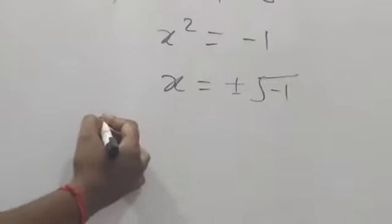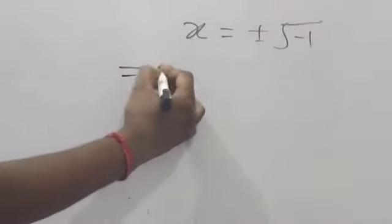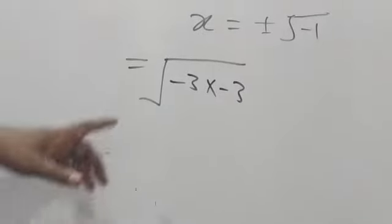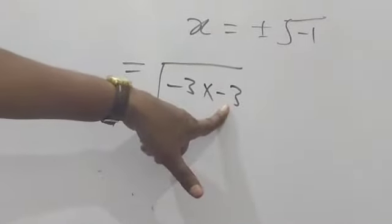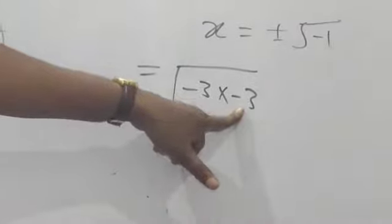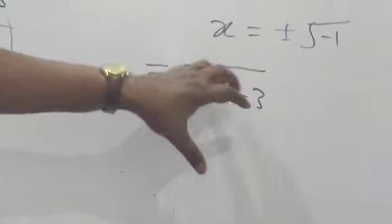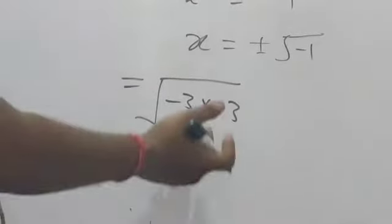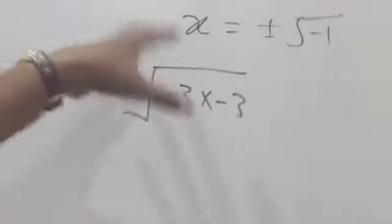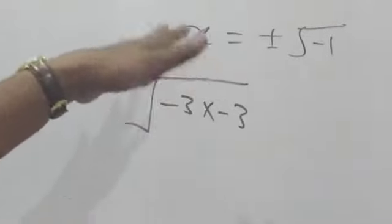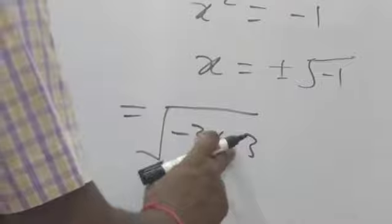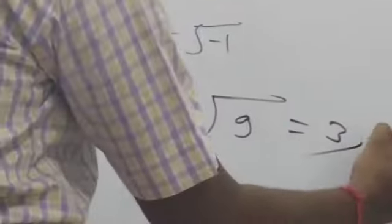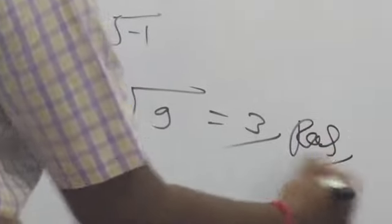Suppose √(-3 × -3). This is also part of a negative number. But after simplification, if inside the root any negative number is there, then we can say the given expression is in complex form. Here, (-3) × (-3) gives +9, and √9 = 3. Now this is a real number.